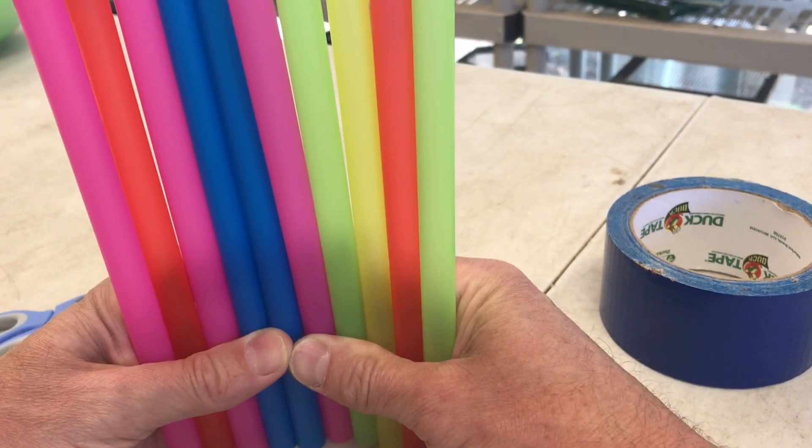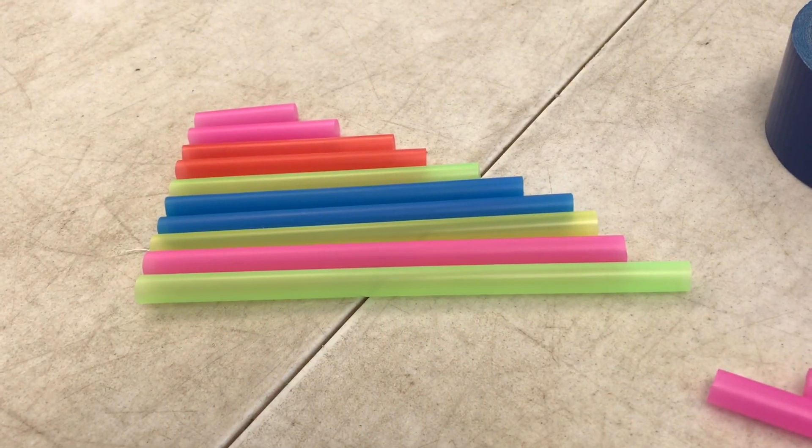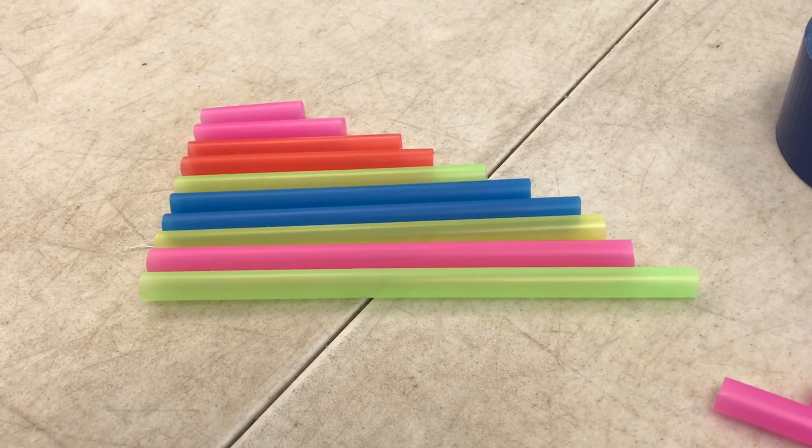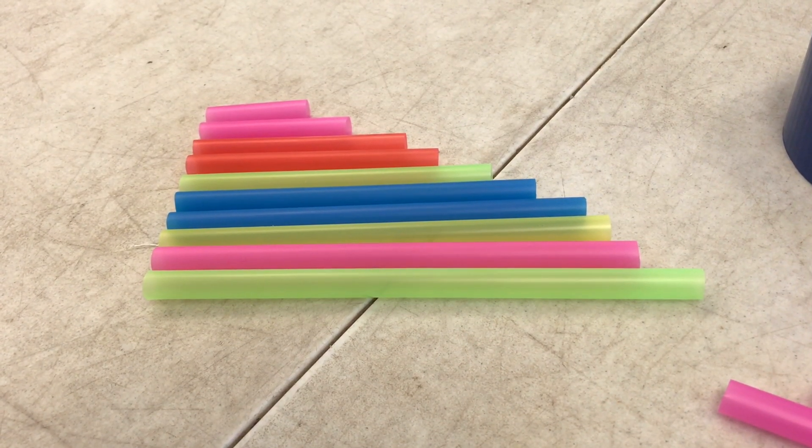Now for the sake of time, I'm going to cut these really quick. Alright, as you can see, I've clipped my straws so we have the staggered different lengths. Now I'm going to lay out a piece of tape and put them all together.